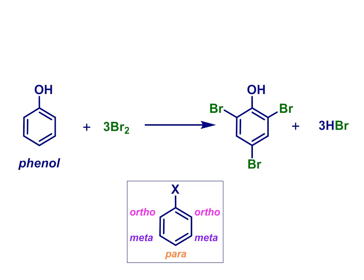Remember we use the descriptors ortho, meta, and para to describe these positions on an aromatic ring. So this is the ortho, para, substituted product.